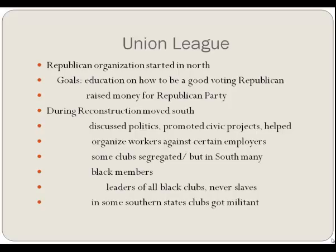They helped treat soldiers after battles and supported the Republican Party with funding and organized political activism. During Reconstruction, the Union League was formed across the South. After 1867, it had auxiliaries in the South that mobilized African Americans who registered to vote Republican, discussed political issues, promoted civic projects, and even mobilized workers against certain employers. Most branches in the South were segregated, but a few were racially integrated, and there were even a couple of all-Black units. But even the all-Black ones were led by men from the North who had never been slaves. Virtually every Black voter in the South enrolled in the Union League.